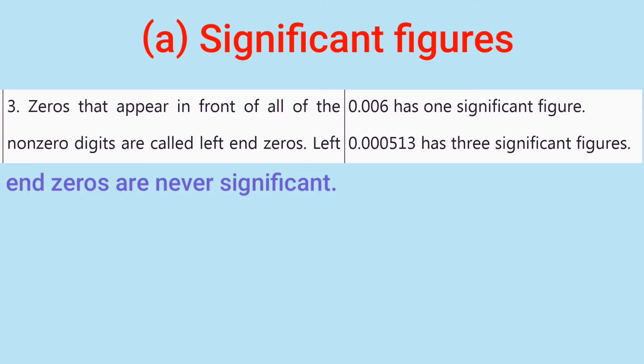Rule number 3: Zeros that appear in front of all of the non-zero digits are called left-end zeros. Left-end zeros are never significant.